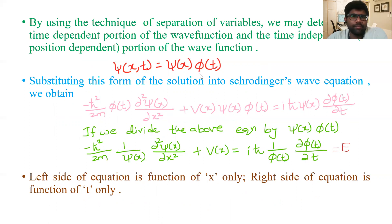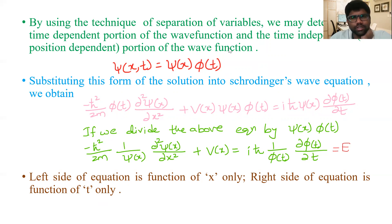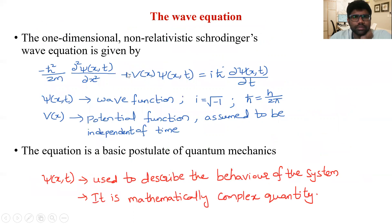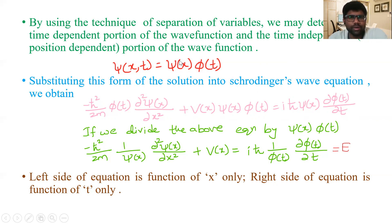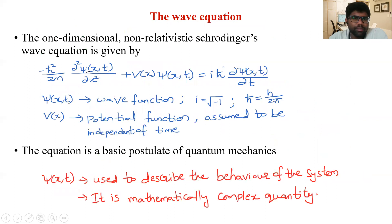Using the technique of separation of variables, we can determine the time-independent and time-dependent portions of the wave function. The wave function ψ(x,t) can be split into two functions: one that is a function of x only (independent of time), and another that is dependent on time but independent of x. We then substitute this form of solution into Schrödinger's wave equation.